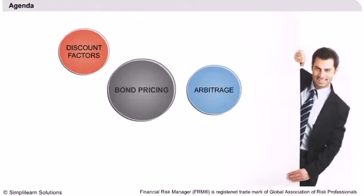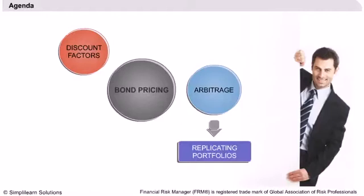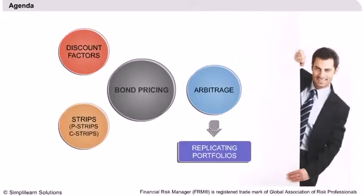We will learn how to take advantage of the arbitrage opportunity by constructing a replicating portfolio using different bonds. The weights of these bonds are taken in such a way that the cash flows from the original bond are exactly replicated. We will also learn to construct stripped bonds using treasury strips, such as principal strips called P-strips and coupon strips called C-strips.